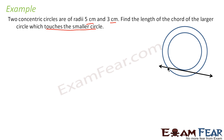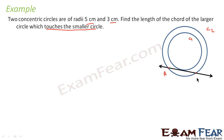This line is a chord to the bigger circle C2 and this is the smaller circle. Now we have to find the length of this chord. Let's call the chord AB, with this point A and this point B.